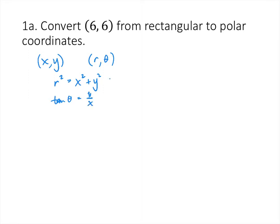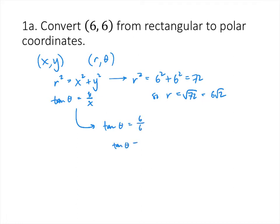Since x and y are both 6, r² = 6² + 6² = 72, so r = √72, which can also be written as 6√2. The tangent of θ equals 6/6 = 1. Since the point is in quadrant 1, θ = arctan(1) = π/4. So our polar coordinates are (6√2, π/4).